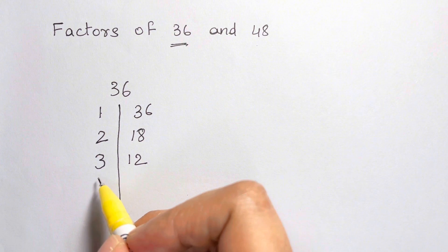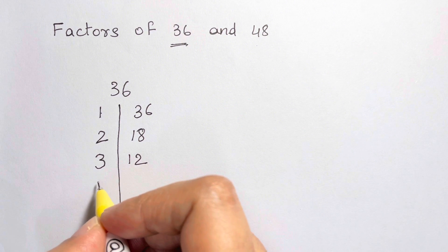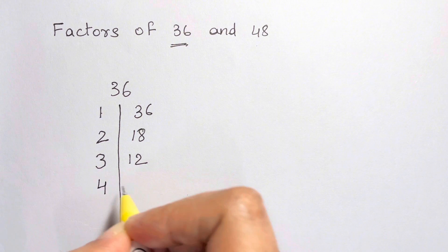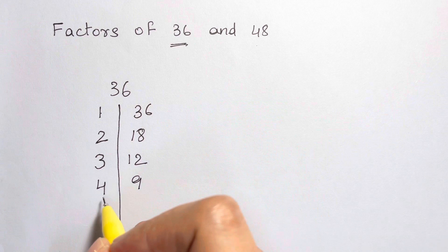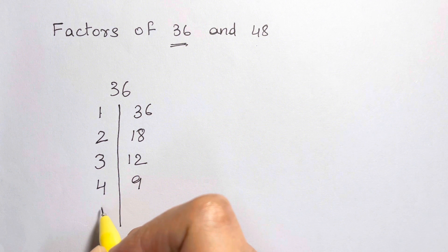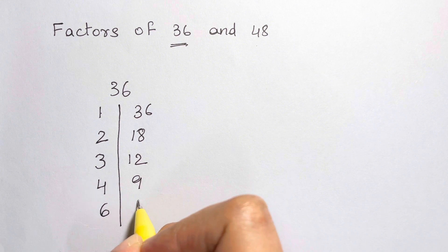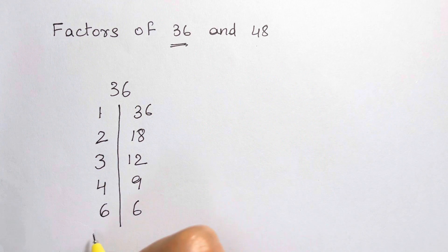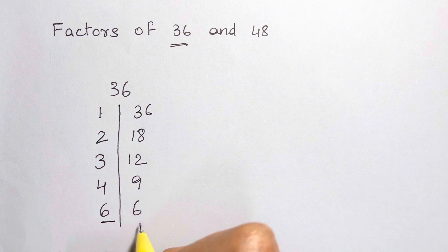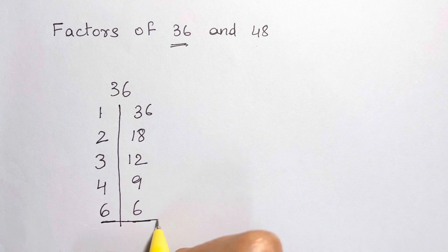Now, the next number after 3, that is 4. 36 divided by 4 gives me 9. So, 4 times 9 is 36. Now, the next number after that, 5. 36 is not divisible by 5. So, the next number after that, 6. So, I'm going to take 6. 6 times 6 gives me 36. So, here I end up, because I've got the same value here on both the sides, so I'm going to end up here.